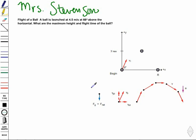Hello, I'm Mrs. Stevenson. Flight of a ball. A ball is launched at 4.5 meters per second at 66 degrees above the horizontal. What are the maximum height and flight time of the ball?